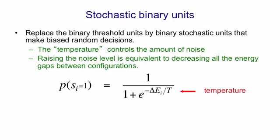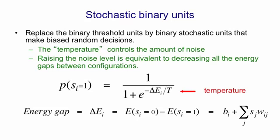At zero temperature, which is what we're using in a Hopfield net, the sign of delta E determines whether the right-hand side goes to zero or goes to one. With T equal to zero the unit will behave deterministically — it will always adopt whichever of the two states has the lowest energy. The energy gap is just the difference in the energy of the whole system depending on whether unit i is off or whether unit i is on.